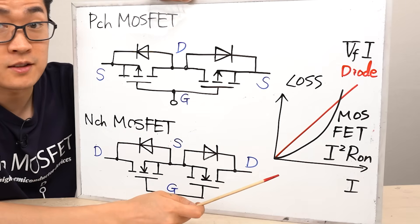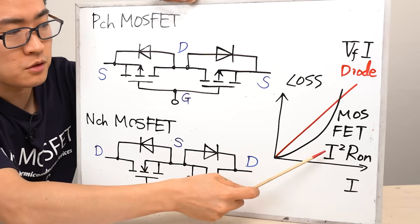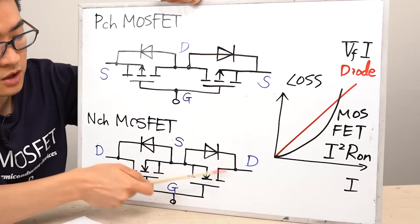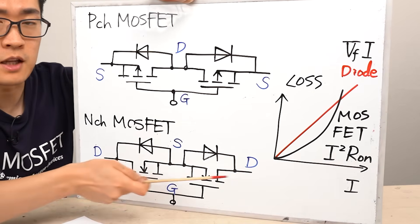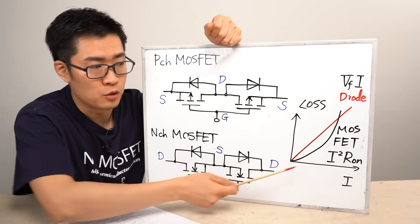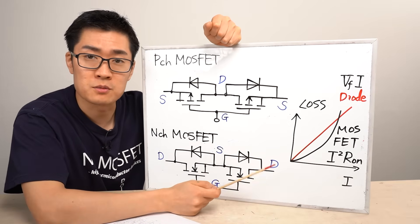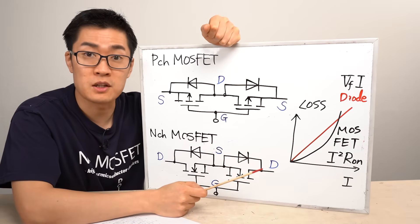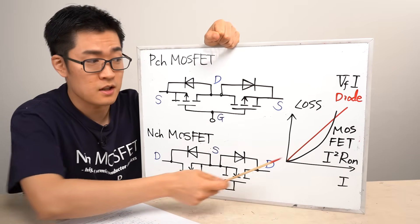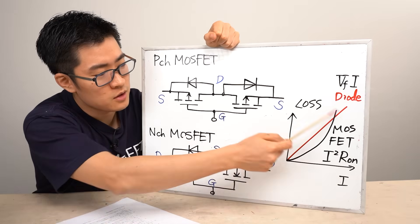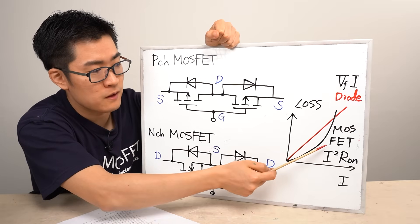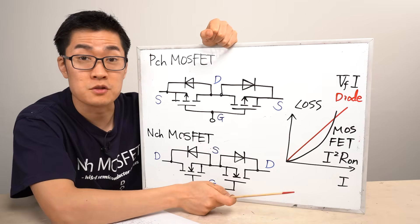Power loss in a MOSFET is proportional to the square of the current multiplied by its on-resistance. This on-resistance refers to the inherent resistance within the MOSFET when it is turned on. For MOSFETs used in load switch applications, on-resistance typically ranges from a few milliohms to several tens of milliohms. Depending on the current level, MOSFETs often exhibit lower power loss than diodes — up to a certain point, routing current through the MOSFET is more efficient.